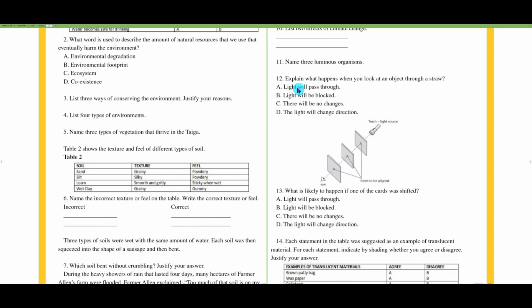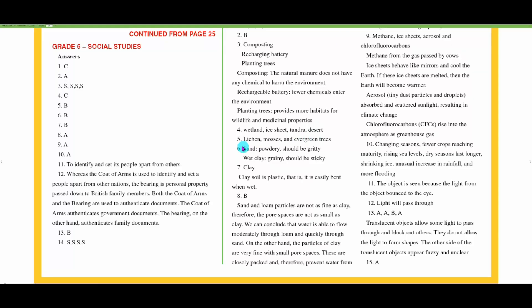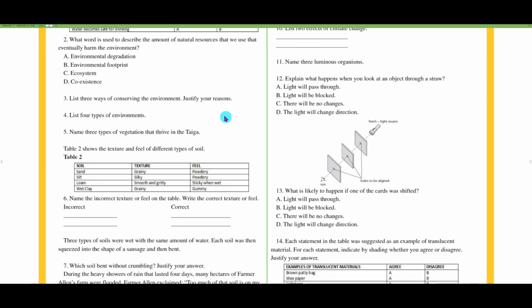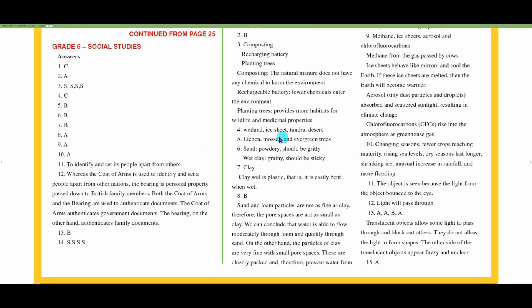Number four: list four types of environments. They have wetlands, ice sheets, tundra, and desert. Number five says name three types of vegetation that thrive in the taiga. They have lichens, mosses, and evergreen trees. Good.